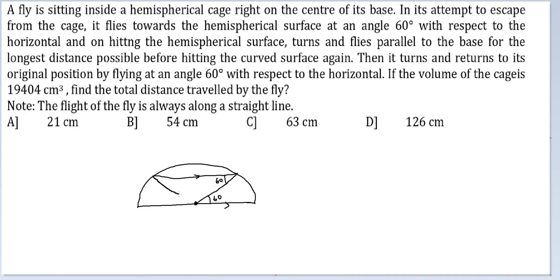And then it is again flying to the base. Again, this is 60 degrees. This line is parallel, so this would be 60. This would be 60. So you get an equilateral triangle here. The distance travelled by the fly is 3 times the radius.